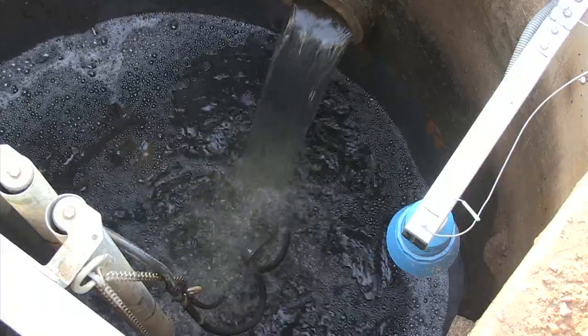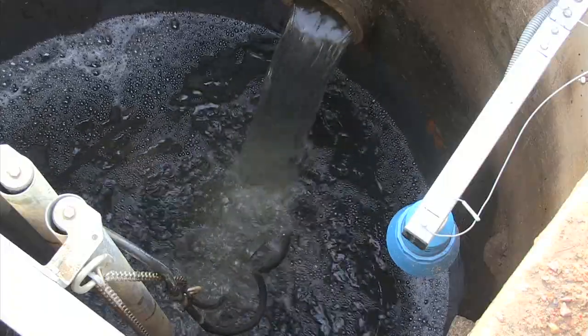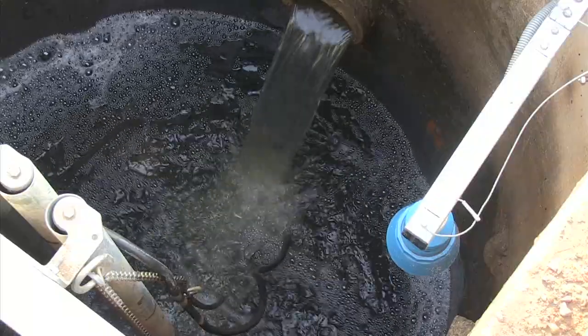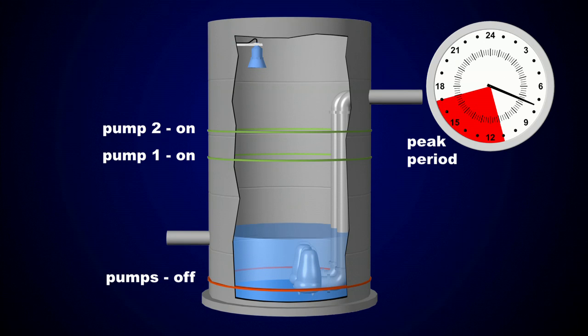The wet well is used to store wastewater before pumping it to another point in the collection system. The Citroen's LUT400 takes advantage of this storage capability during the peak tariff periods. Prior to the peak period, the Citroen's LUT400 runs the pump to reduce the level of wastewater.